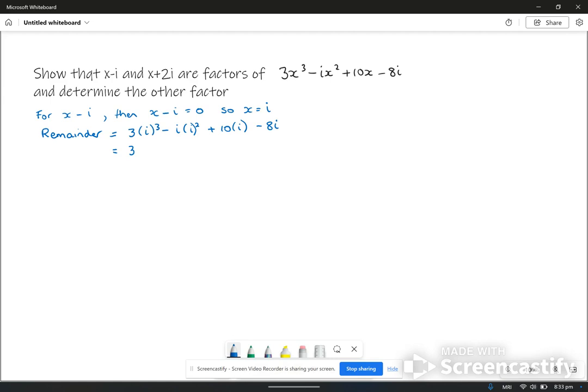i squared is negative 1, so that's times by negative 1 times i that's left over minus i squared is negative 1, so that's negative times the negative is positive, so it's i and that's plus 10i minus 8i.